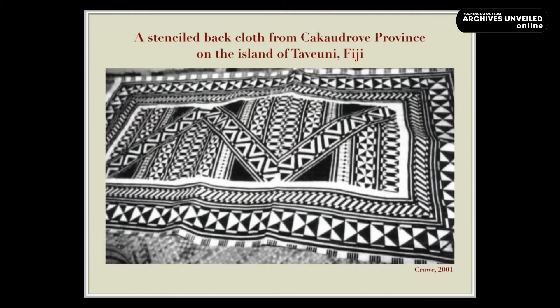Another example is the stenciled cloth and fabric from the Kakadrova Province in Fiji. Professor Donald Crowe, an American mathematician, has analyzed this cloth for its frieze pattern structure.